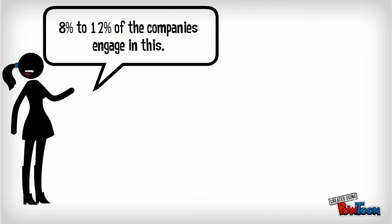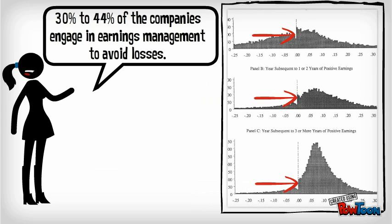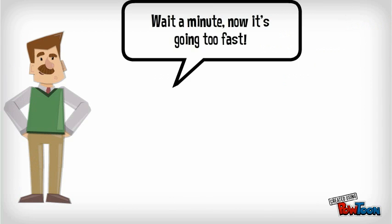8 to 12% of the companies engage in this. When looking at losses, the graphs show similar results. In this case even 30 to 44% of the companies engage in earnings management to avoid losses. Wait a minute, now it's going too fast.